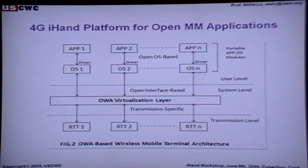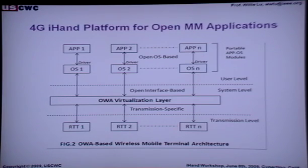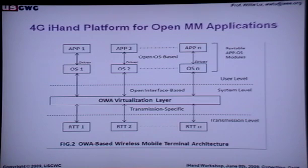OWA is a virtualization layer sitting between the transmission level and the system level. Above the system level, we can support user levels with different OS. Below the transmission level, we can support different RTT — GSM, 3G, Wi-Fi, WiMAX, whatever. The OWA virtualization layer maps different RTT into different parameters on a common hardware platform, and also maps different OS into different parameters on the same OS pipe.